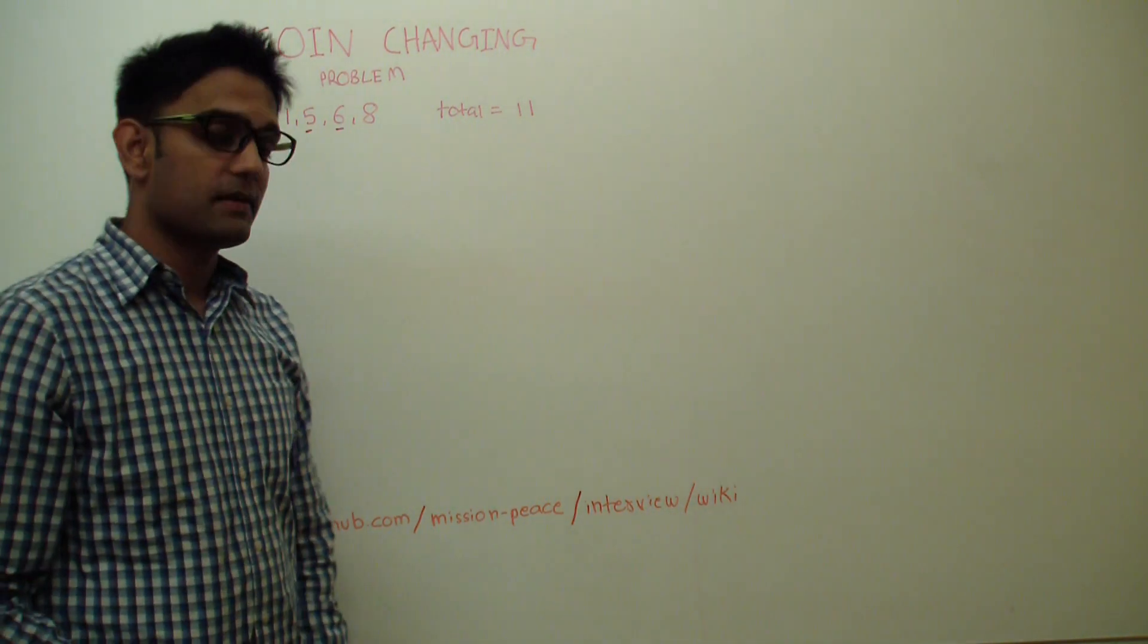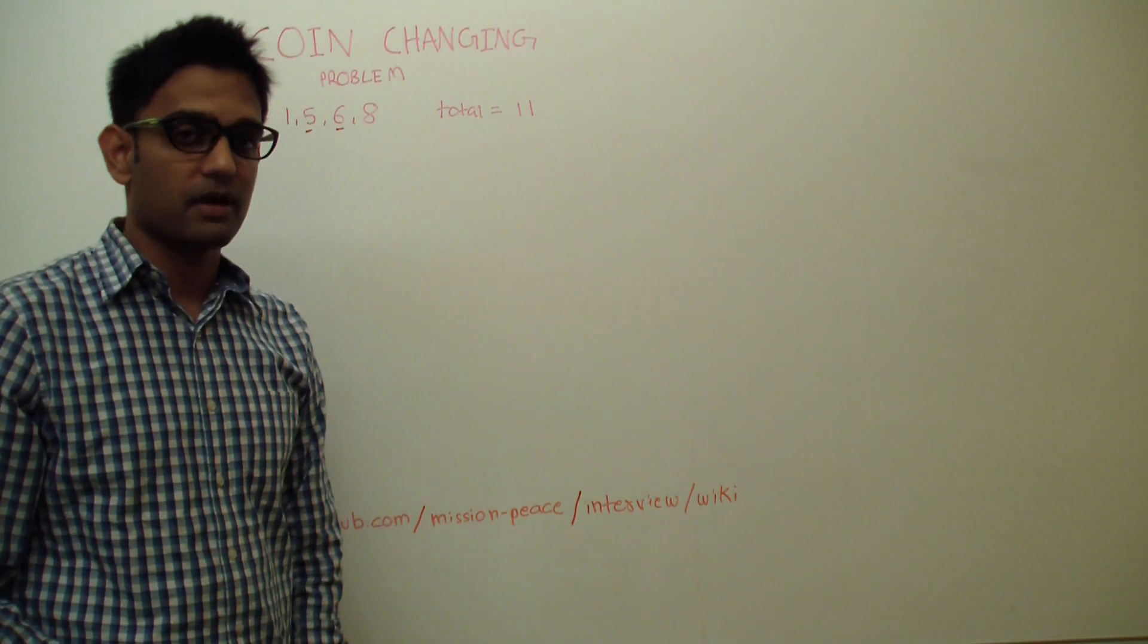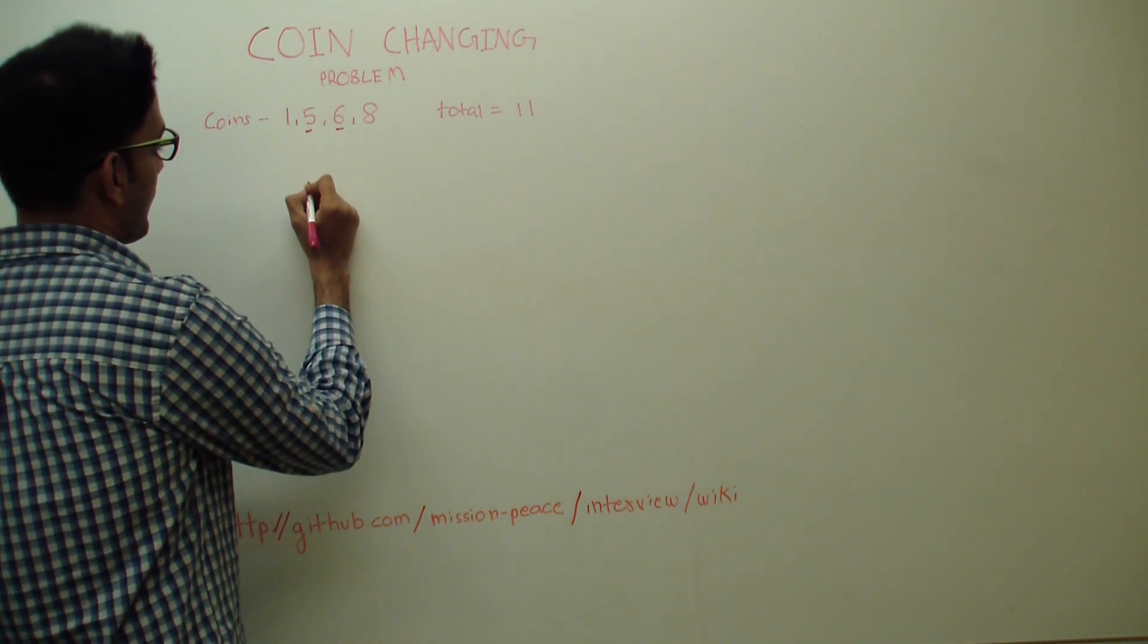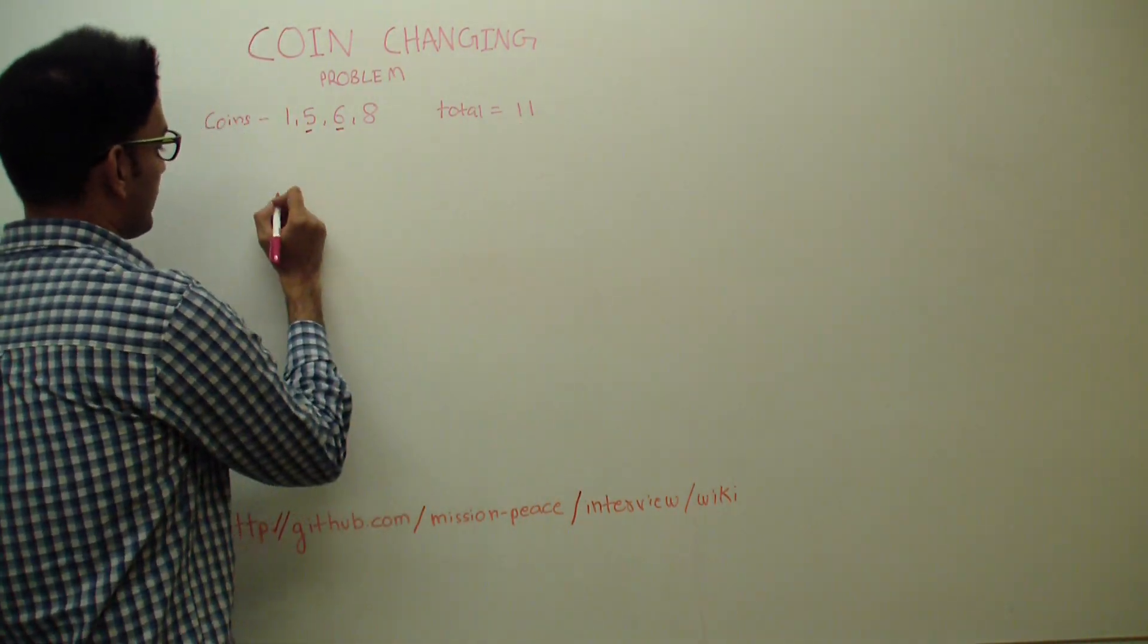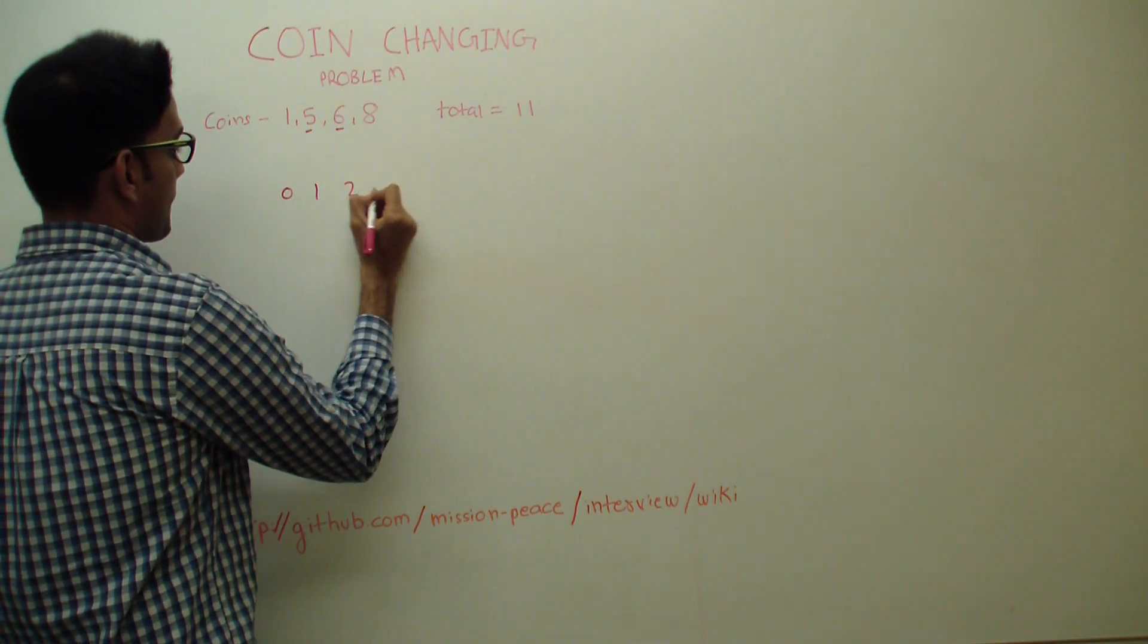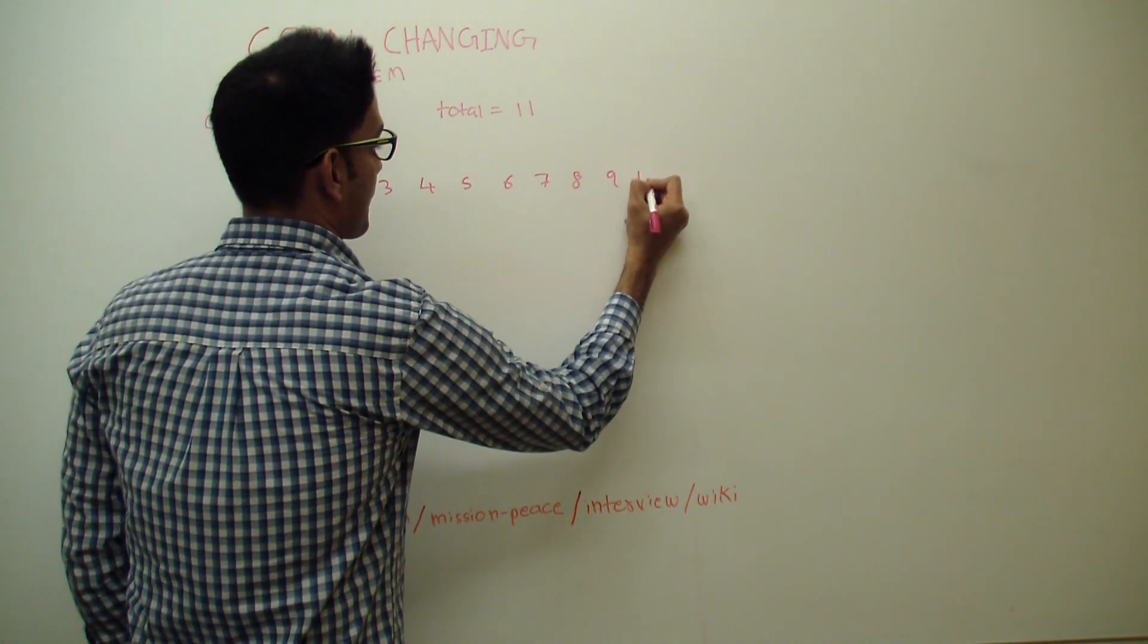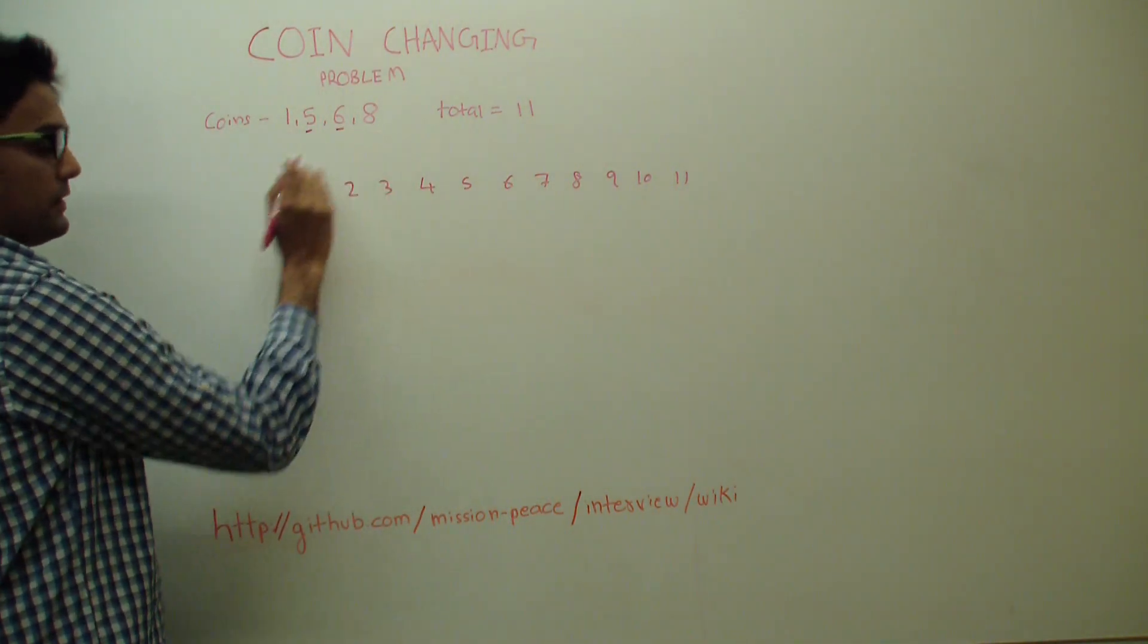So to build this we'll start by building a 2-dimensional temporary array which will store our intermediate states to lead towards a final answer. So on the row we'll have these numbers up to 11, and the column we'll have these coins.